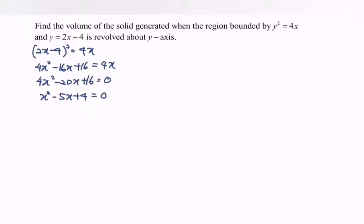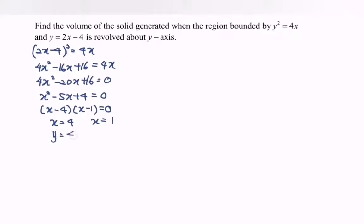Factoring the equation: (x minus 4)(x minus 1) equals 0. So x equals 4 and x equals 1. Substituting back into y, we get y equals 4 and y equals negative 2. So the points of intersection are (4, 4) and (1, negative 2).